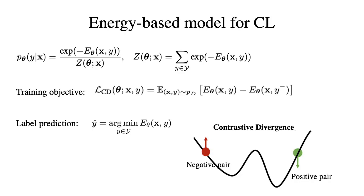Inspired by energy-based model works, we propose to use the contrastive divergence training objective to train our model. Given an image, we want the energy between the image and the ground-truth class label to be low, and the energy between the image and the negative class label to be high. During testing, we feed each class label to the energy function and compute its energy with the image. The prediction is the class label with the lowest energy.